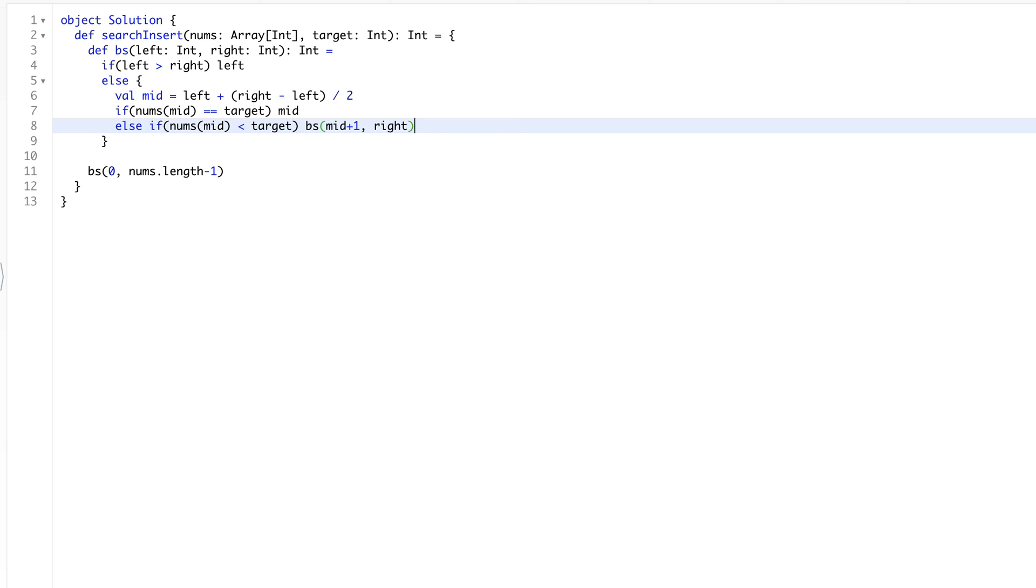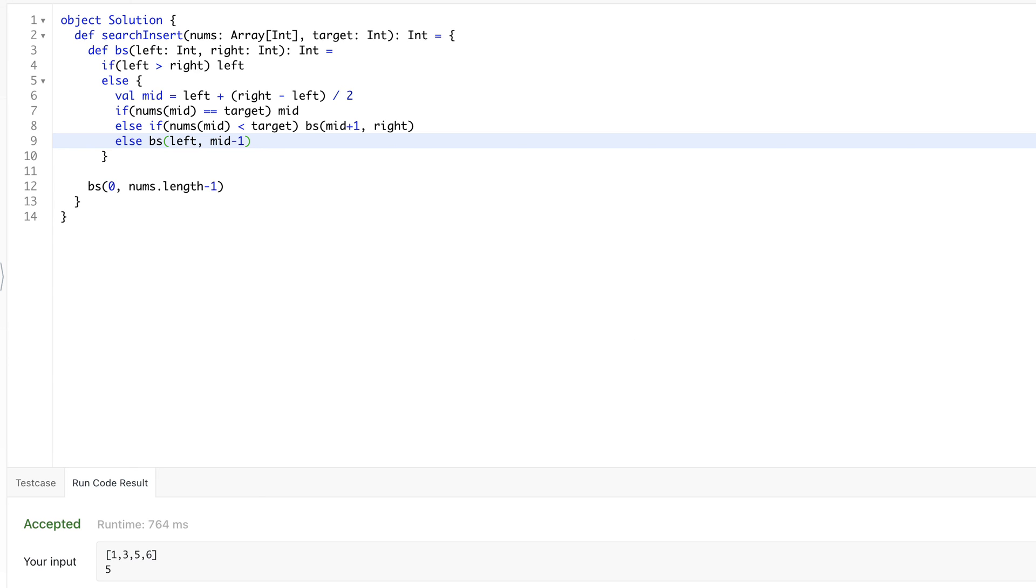And in the else part, when nums[mid] is greater than our target, in that case we will use binary search from left to mid minus one. And that's it. Now let's run the code. So it works. Thanks!